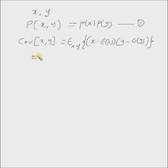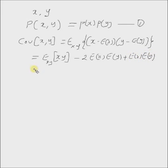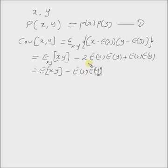Expanding the right-hand side, we get expectation of X times Y, minus two times expectation of X multiplied by expectation of Y, plus expectation of X times expectation of Y. This simplifies to expectation of X times Y, minus expectation of X times expectation of Y. Now we have to evaluate the expectation of X times Y.